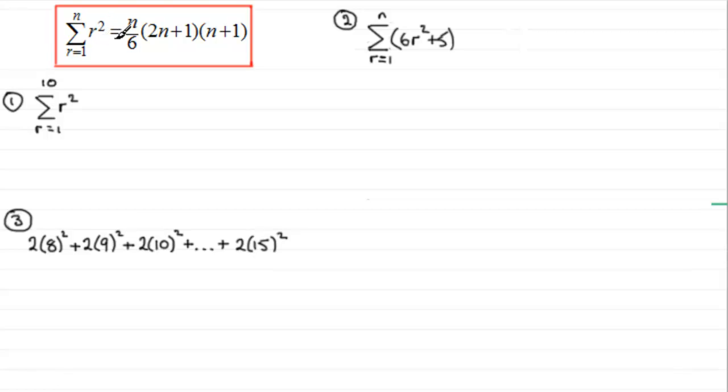Now we're moving on to summing r squared type terms. And it can be shown that if you were to sum r squared, r going from 1 to n, then it turns out to be equal to n over 6 multiplied by 2n plus 1 multiplied by n plus 1.